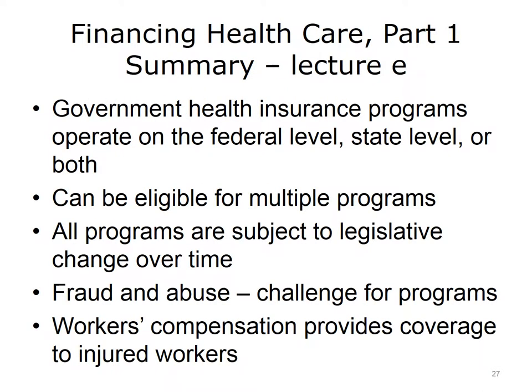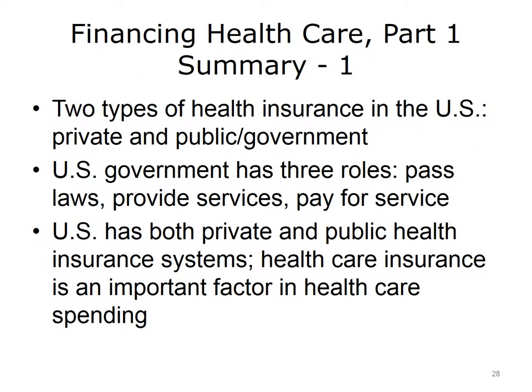This concludes Lecture E of Financing Healthcare Part 1. In summary, government insurance programs operate on the federal level, state level, or both, including Medicare, Medicaid, and CHIP. Some people are eligible for both Medicaid and Medicare, or for both Medicaid and CHIP. All of the programs discussed are subject to legislative change over time — an example being the CHIP program expansion in 2009 under President George W. Bush. Fraud and abuse represents a challenge in these large government programs, and attempts are being made to manage this through education and legislation. Workers' compensation is a federally mandated program provided in each state that protects workers and their families when on-the-job injuries occur.